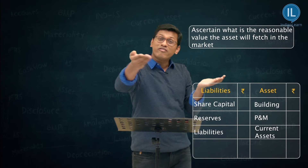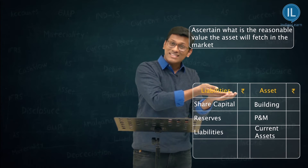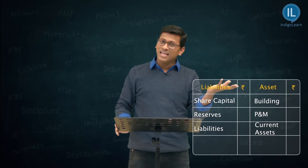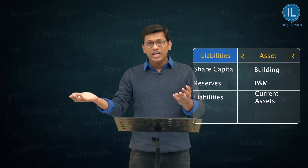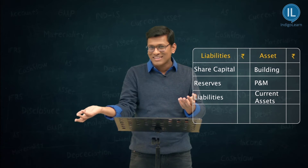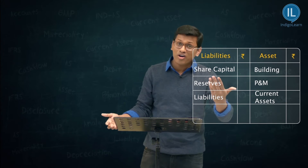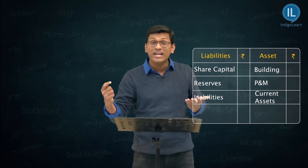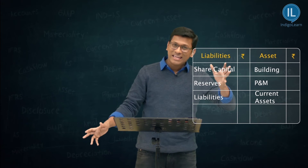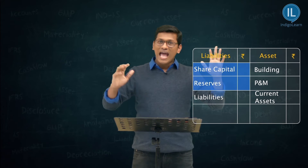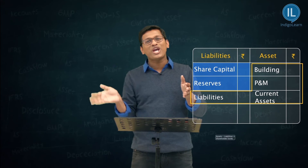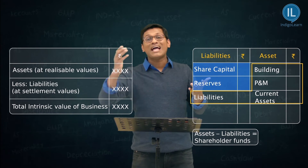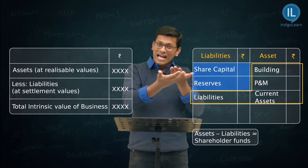Based on the value you get from the outside world for assets in your balance sheet, you ascertain what those assets are worth. Then come to the liabilities — you will have to settle them. You take assets at their market realizable values and liabilities at their settlement values, then subtract asset value minus liability value.